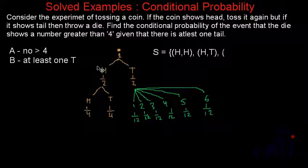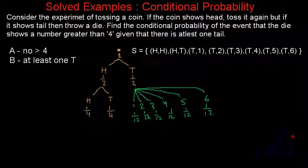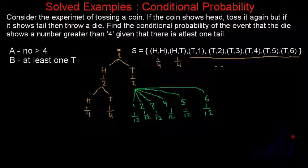We can also have a tail followed by each number on the dice: T and 1, T and 2, T and 3, T and 4, T and 5, and T and 6. One important thing to remember is that all outcomes in the solution space do not have equal probability. Getting two heads has probability 1/4, getting a head and a tail has probability 1/4, but all six tail-and-dice outcomes each have probability 1/12. So we must be very careful while calculating the conditional probability and follow the formula properly.